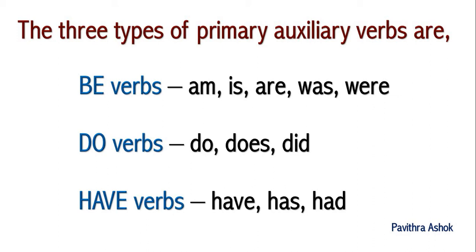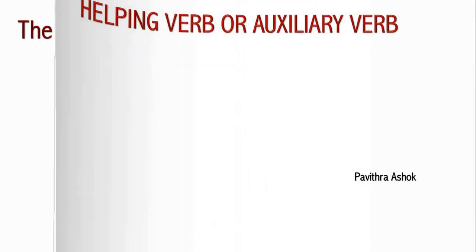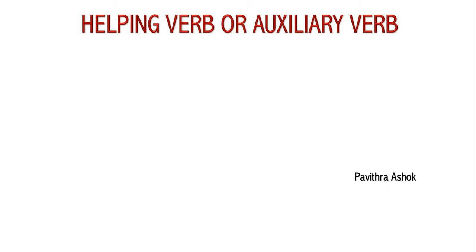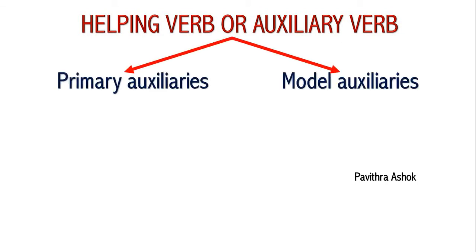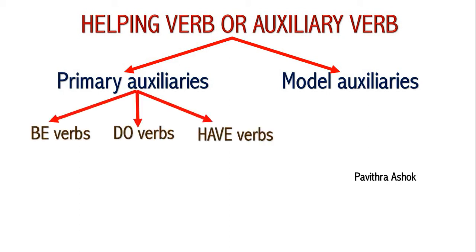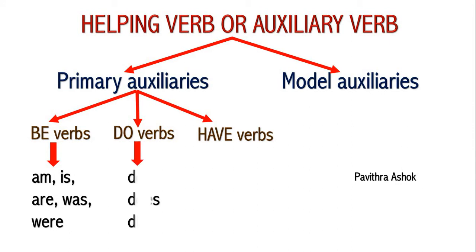Students, please look at this to understand the types of auxiliary verbs easily. Helping verbs or auxiliary verbs are of two types: primary auxiliaries and modal auxiliaries. Primary auxiliaries are of three types: be verbs (am, is, are, was, were), do verbs (do, does, did), and have verbs (have, has, had). I hope it's clear now.